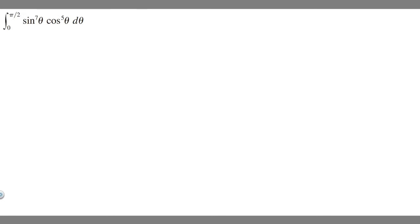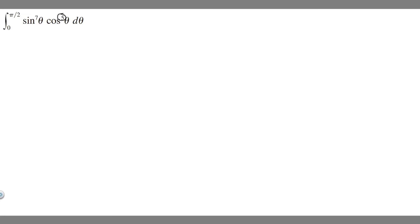What you should notice is we have cosine of θ to an odd exponent — cosine to the fifth — and sine to an odd exponent, so they're both to odd exponents. When they're both odd, you want to take the lower odd exponent, which in this case is 5, and break a cosine off from it.